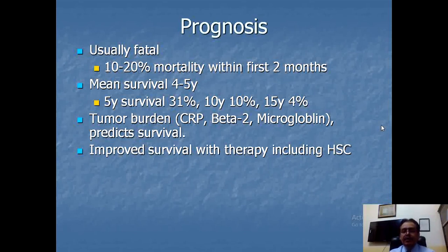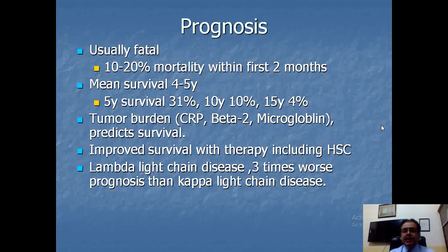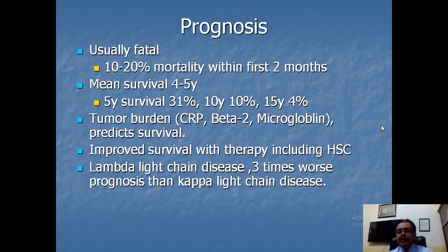Survival improves with hematopoietic stem cell transplantation. The lambda light chain disease has three times worse prognosis than kappa light chain disease. If the ratio of lambda to kappa chains is higher in circulation, the prognosis is three times worse compared to kappa chain light disease.